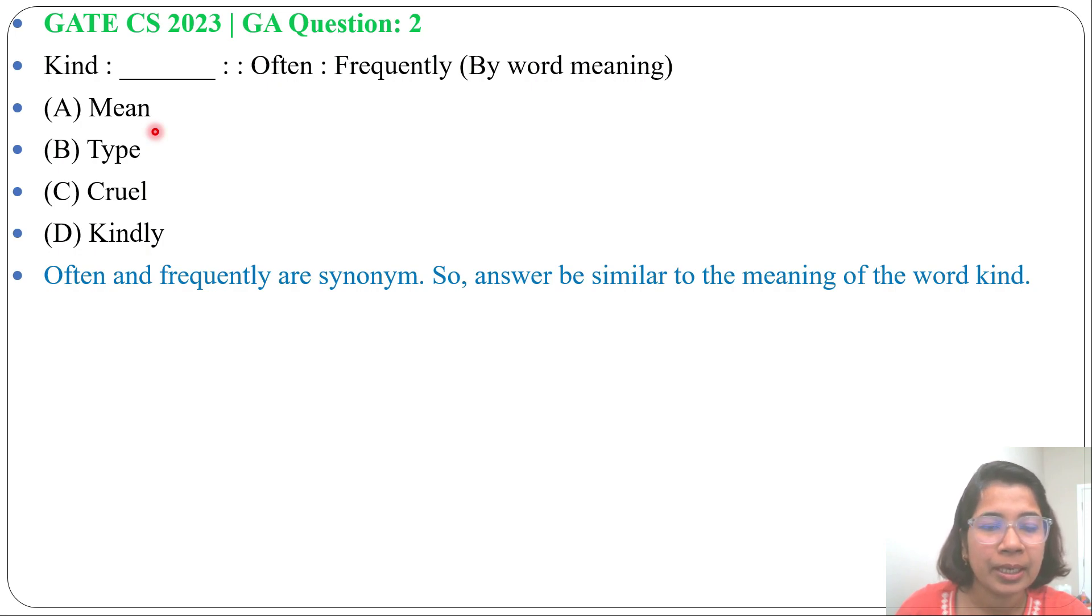Next is Cruel. Cruel has different meaning - cruel and kind are not the same. He is very cruel, we can say. Option D is Kindly. Kindly is a different form of kind, but here it should be a synonym, so it cannot be kindly. Kindly is the adverb of kind.